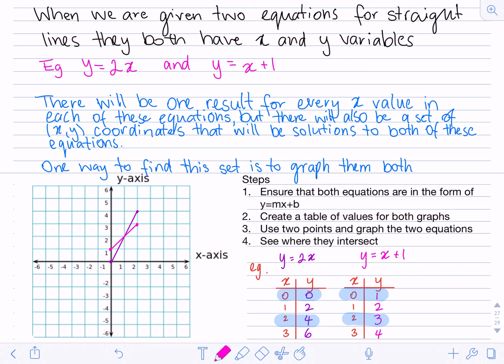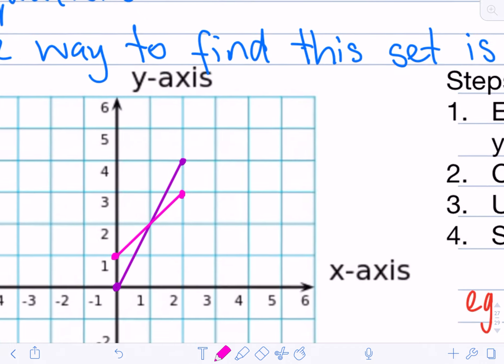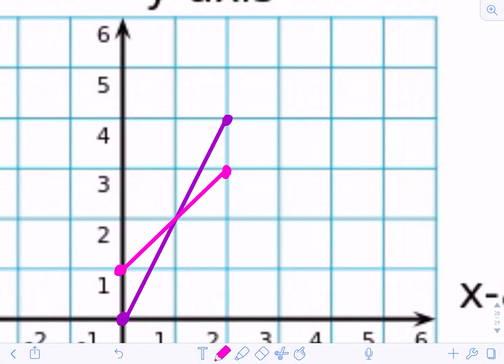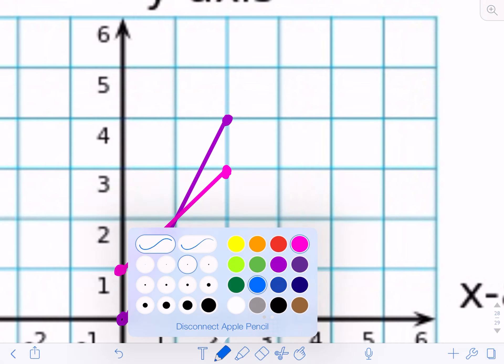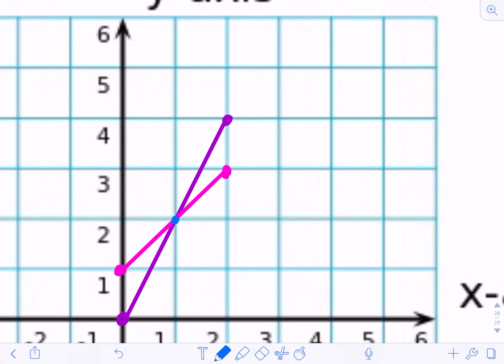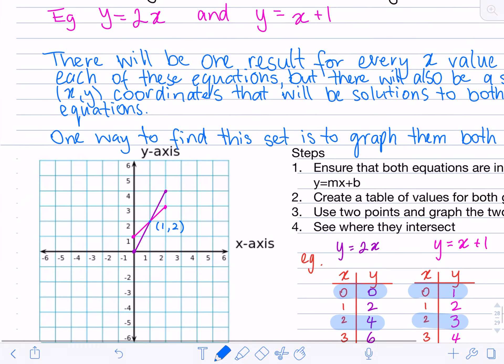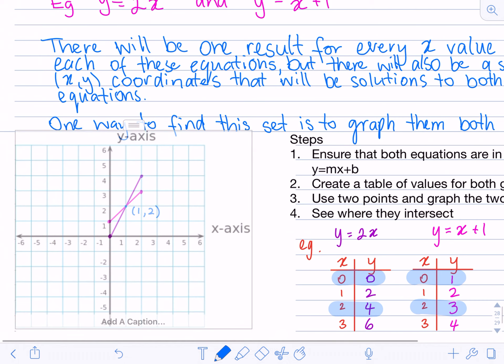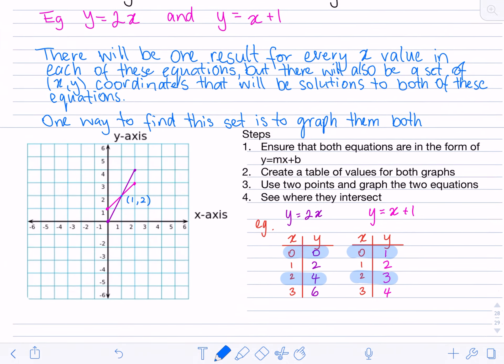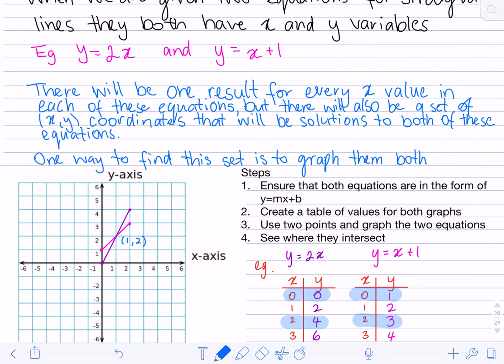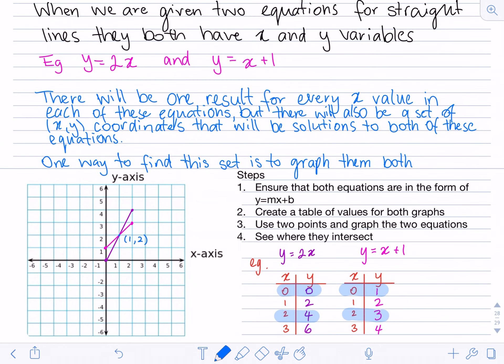Now see where they intersect. Intersect means where do they cross over. So if I zoom into this for a second, you'll see they cross over exactly at that blue point, which is 1, 2. That is a solution to our question here. They both cross over. They both meet the condition of 1, 2.